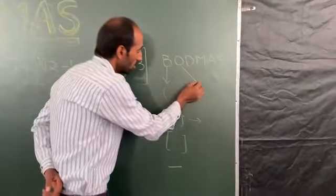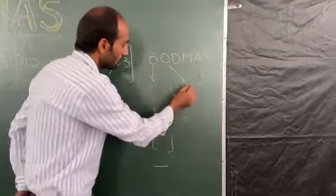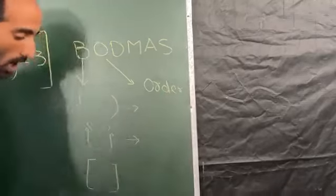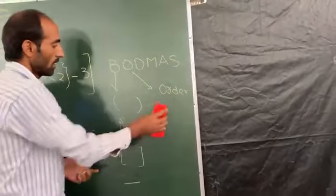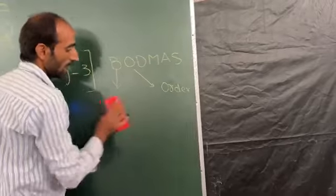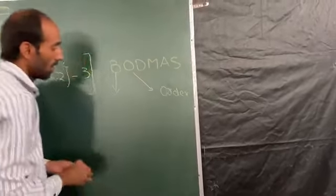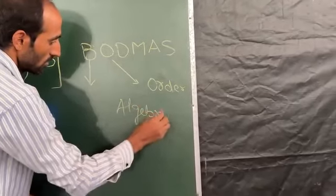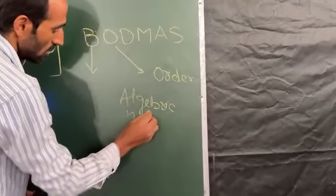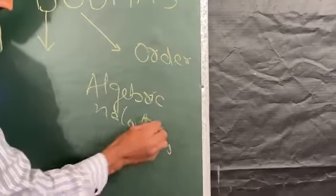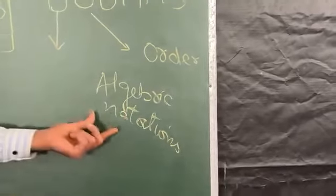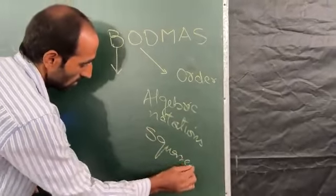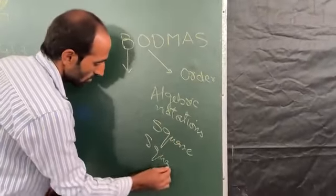In O, which stands for order, we consider things like algebraic notations. For example, suppose we are having square roots — these fall under the order category.